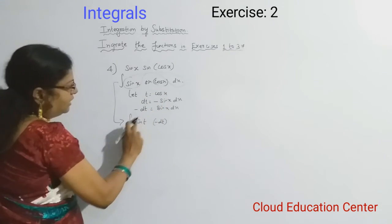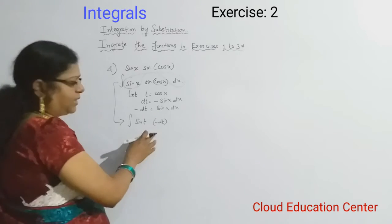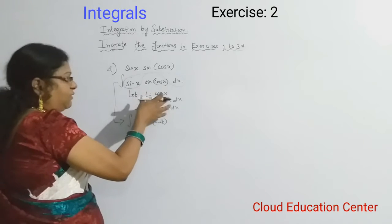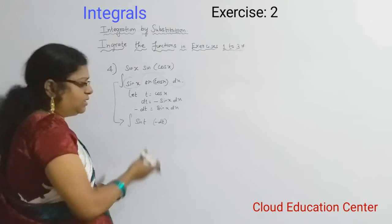We will write here t. Here in this conversion, we don't have any x variable, so this is fine. That means whatever new variable we're introducing, everything should be converted into the new variable. It is got converted.